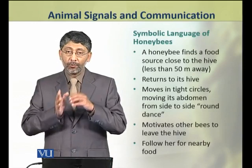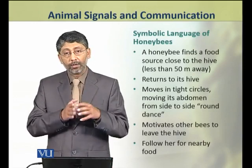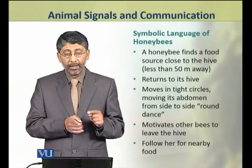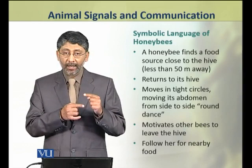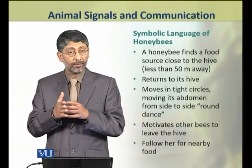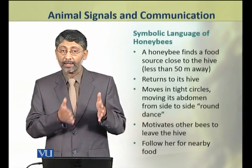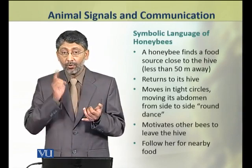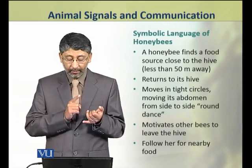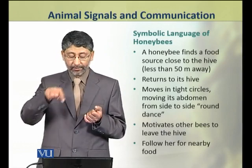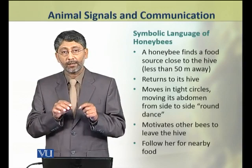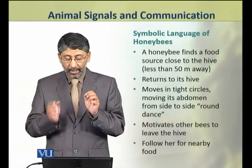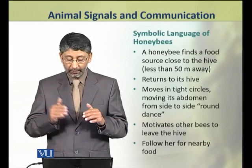When a honeybee finds a food source and that food source is nearby — that is, within a range of 50 meters or less — it returns to its hive and wants to communicate to the other honeybees that a food source has been found. For this, a special language is used, called the symbolic language of honeybees. This honeybee moves in tight circles from side to side, and this movement is called the round dance. The round dance motivates other bees to leave the hive and follow her to the nearby food.